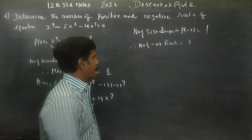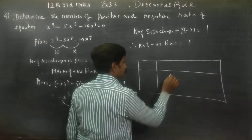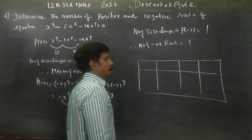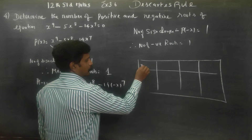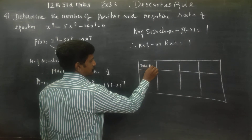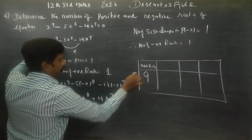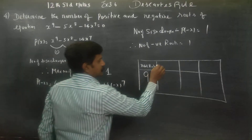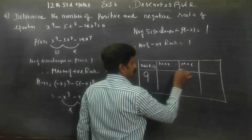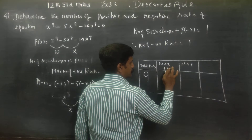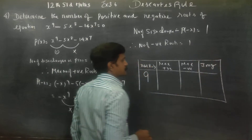This is the rule for roots. Total roots: since the polynomial is x power 9, the total number of roots is 9. Maximum positive roots is 1, and maximum negative roots is 1. The remaining roots are imaginary roots.